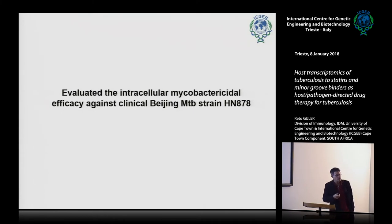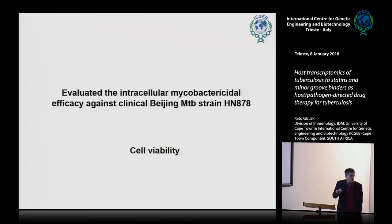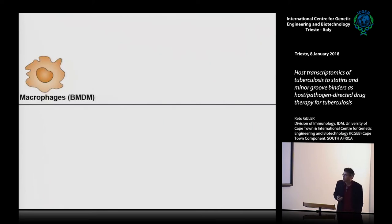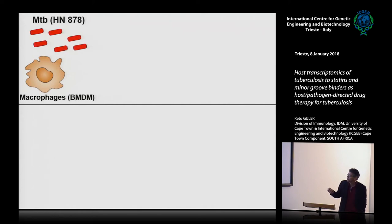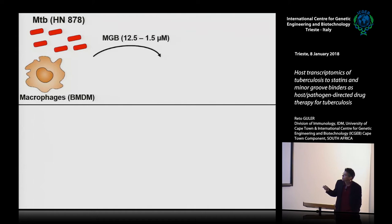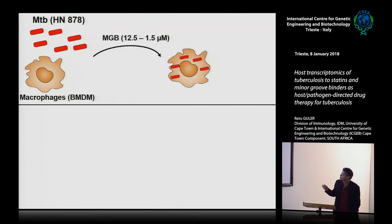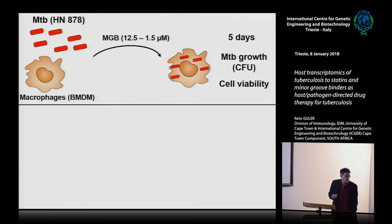For active compounds to work, they also have to be active inside cells. We wanted to identify intracellular killing activity and assess whether these compounds are toxic to mammalian cells. We used bone marrow-derived macrophages from mice, infected them with the hypervirulent clinical strain HN878. Four hours post-infection, we applied MGBs at different concentrations, and at five days post-infection we assessed MTB growth and macrophage viability.